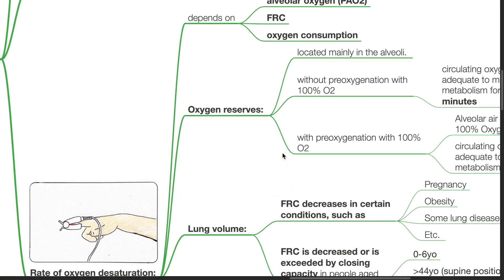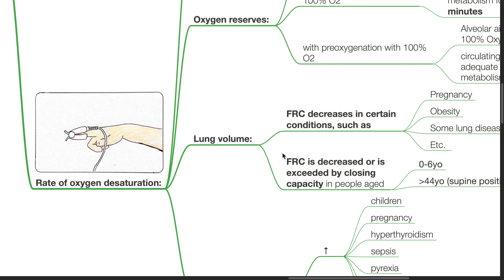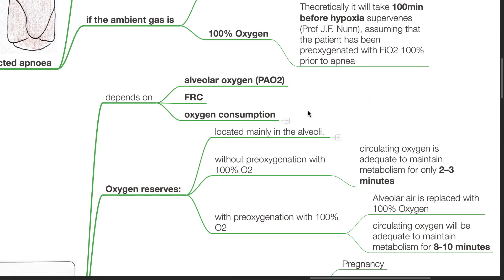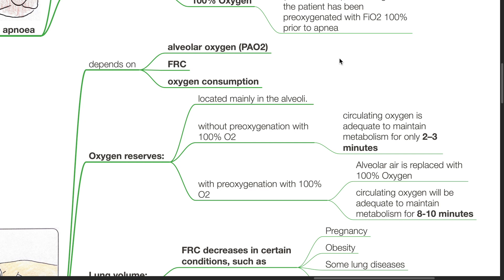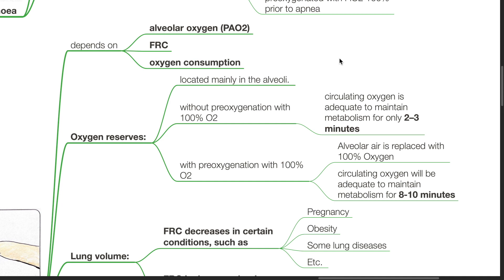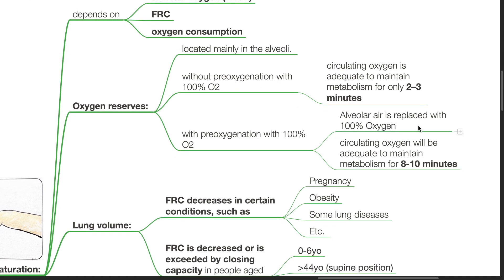The rate of oxygen desaturation depends on alveolar oxygen, FRC, and oxygen consumption. Oxygen reserves are located mainly in the alveoli. Without pre-oxygenation with 100% oxygen, circulating oxygen is adequate to maintain metabolism for only 2–3 minutes. With pre-oxygenation with 100% oxygen, alveolar air is replaced with 100% oxygen and circulating oxygen will be adequate to maintain metabolism for 8–10 minutes.